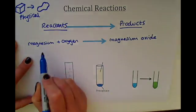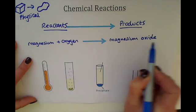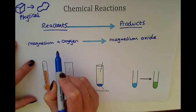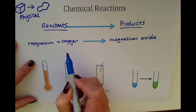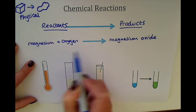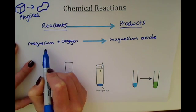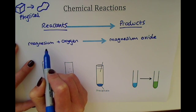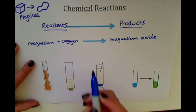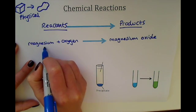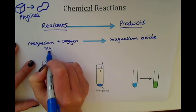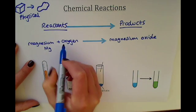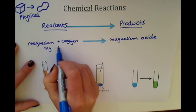This is a word equation. We might also want to write this equation using symbols, so we would look on the periodic table to find the symbol for magnesium, which is Mg, and then react it with oxygen.